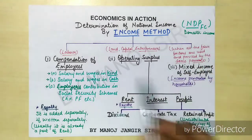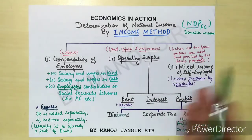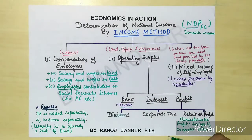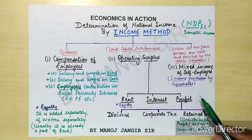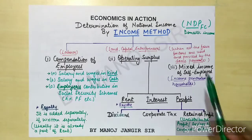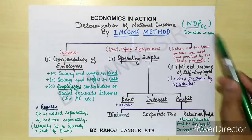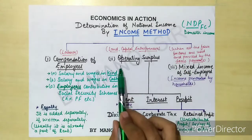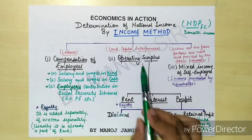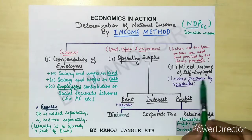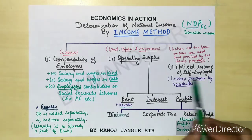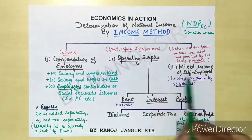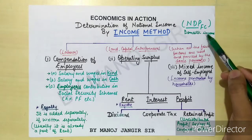Starting with NDPFC as our bus stop, the formula is: NDPFC equals compensation of employees (COE) plus operating surplus (OS) plus mixed income (MI). You add COE, OS, and MI together to get NDPFC. If compensation of employees is not given directly, use its sub-items. If operating surplus is not given, add profit, rent, and interest separately.